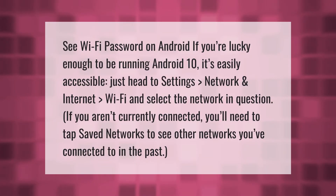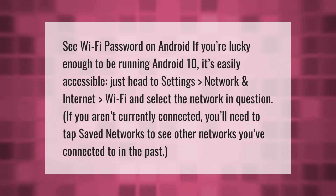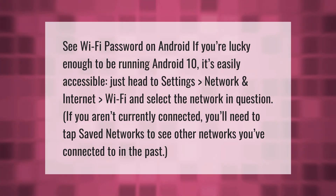To see the Wi-Fi password on Android, if you're running Android 10, it's easily accessible. Just head to Settings > Network and Internet > Wi-Fi and select the network in question. If you aren't currently connected, tap 'Saved Networks' to see other networks you've connected to in the past.